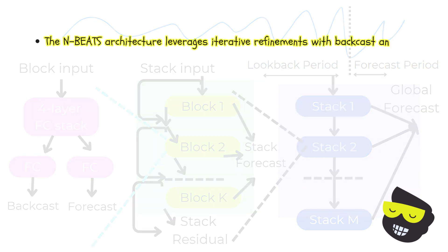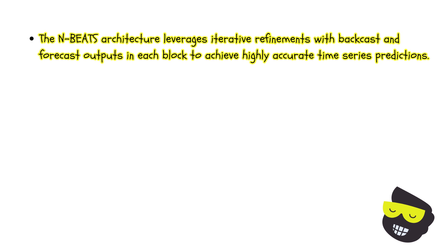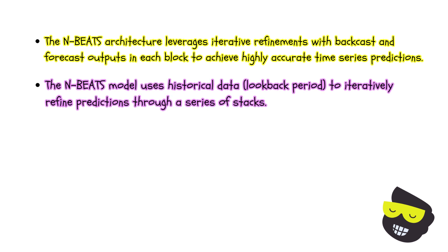In summary, the N-BEATS architecture uses a series of stacks, each made up of multiple blocks, to iteratively refine forecasts. Each block processes the input data through a 4-layer fully connected stack, producing both backcast and forecast outputs. The backcast helps correct residuals, while the forecast period is the future timeframe we aim to predict. The process starts with stack 1, which takes the look-back period data and generates initial predictions. These predictions and the residuals — the differences between predicted and actual values — are then passed on to the next stack for further refinement.